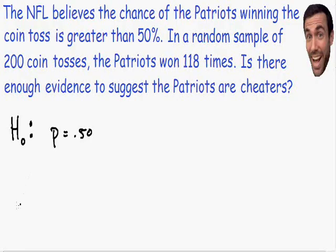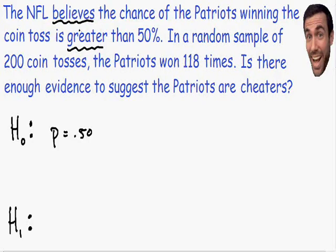Now let's state our alternative hypothesis, written with H sub one or H sub a. The alternative hypothesis is always what is being claimed. In this example, the NFL is claiming that the chance of the Patriots winning the coin toss is greater than 50%. 'Greater' is a very important word to recognize in this problem — they're claiming it's greater than 50%, not less than. So our alternative hypothesis is that the probability of winning the coin toss is greater than 50%, meaning the Patriots are using an unfair coin.